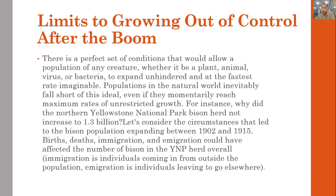So what are the limits to growing out of control after the boom? There is a perfect set of conditions that would allow the population of any creature — whether a plant, animal, virus, or bacteria — to expand unhindered at the fastest rate imaginable. However, populations in the natural world inevitably fall short of this ideal. For instance, why did the Northern Yellowstone National Park Bison not increase to 1.3 billion? Circumstances including births, deaths, immigration, and emigration could have affected bison population numbers.